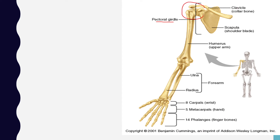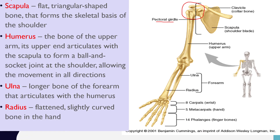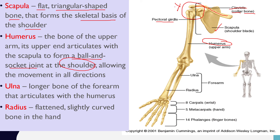The pectoral girdle features a ball and socket joint. We have the clavicle, also known as the collar bone. We also have the scapula — the shoulder blade — a flat triangular-shaped bone that forms the skeletal basis of the shoulder. The humerus is the bone of the upper arm; its upper end articulates with the scapula to form a ball and socket joint at the shoulder, which is a freely movable joint allowing movement in all directions.